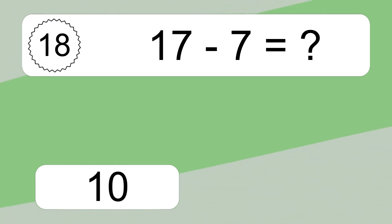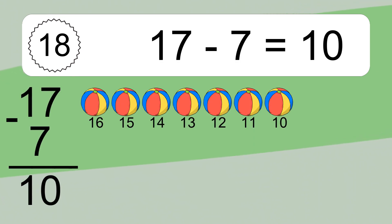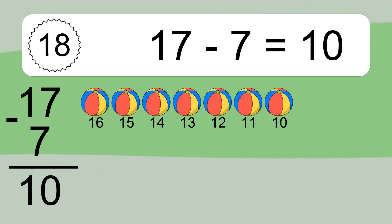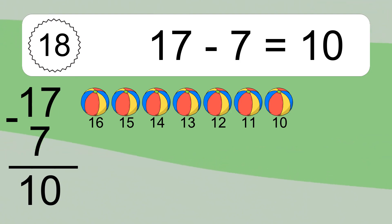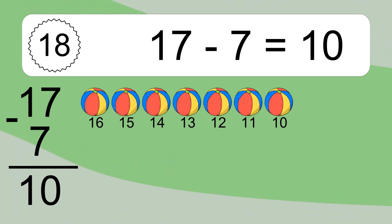17 minus 7 equals 10. Let's count it: 16, 15, 14, 13, 12, 11, 10.